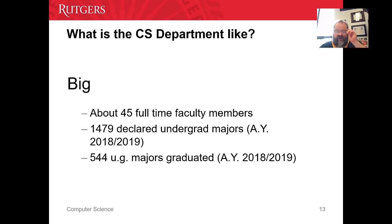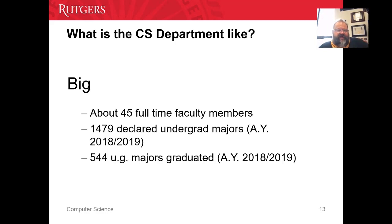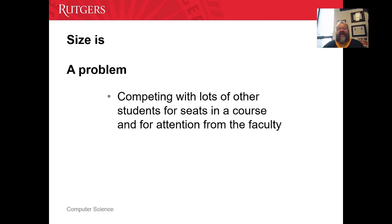which is high. Computer science enrollments have quadrupled in the past four to five years. Back four, five, six years ago, I think one of the graduating senior classes was 113. So we are getting bigger and bigger, and that's good — and that's bad. Part of the bad is that your initial classes, like intro to computer science or even data structures, are going to be big.